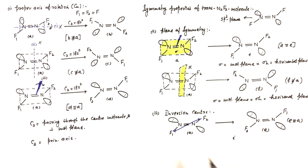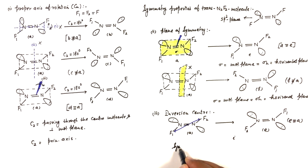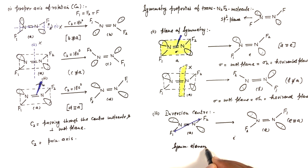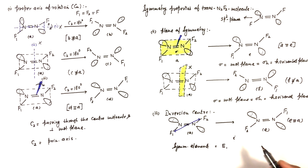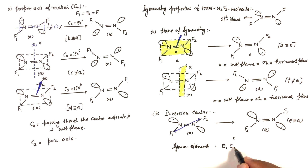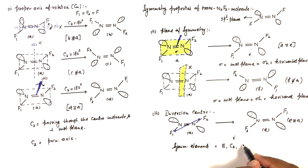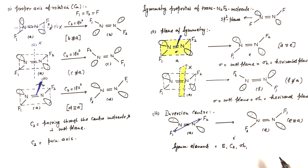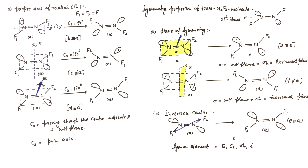So the total symmetry elements present in the trans N2F2 molecule are: first, identity (E); second, C2 (proper axis of rotation); third, σh (horizontal plane of symmetry); and fourth, the inversion center (i).